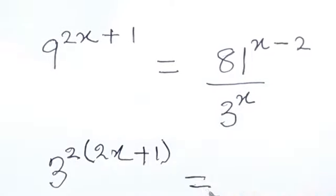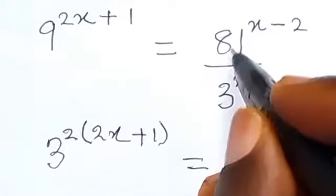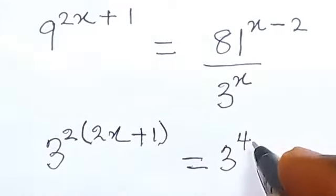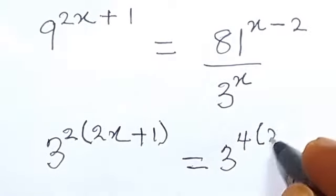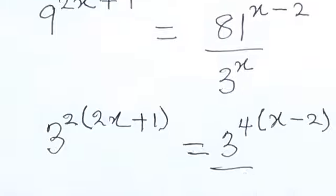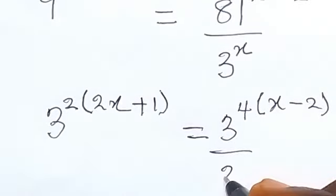Then equals to, also on this side we have 81 and that will be written as 3 raised to the power 4. Therefore also multiply the exponent x minus 2, then divided by 3 raised to the power x.